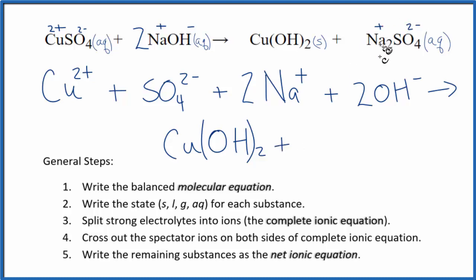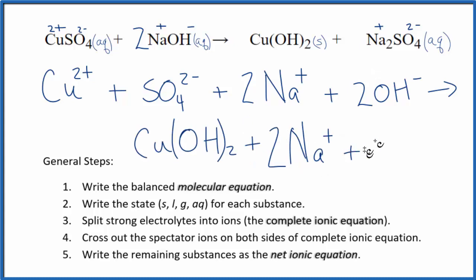Plus we have, we said this was positive. This is 2 minus. Na+, and we have 2 of those. This little subscript means we have 2. Plus we have the sulfate ion, SO4 2 minus. So this is the complete ionic equation.